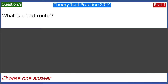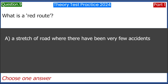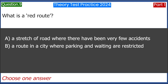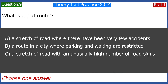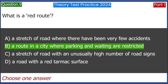What is a red route? A. A stretch of road where there have been very few accidents. B. A route in a city where parking and waiting are restricted. C. A stretch of road with an unusually high number of road signs. D. A road with a red tarmac surface. Answer: B. A route in a city where parking and waiting are restricted.